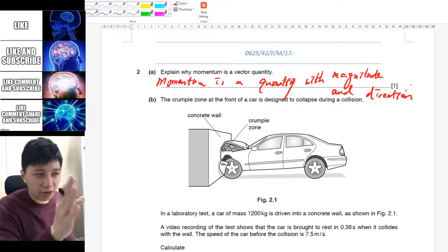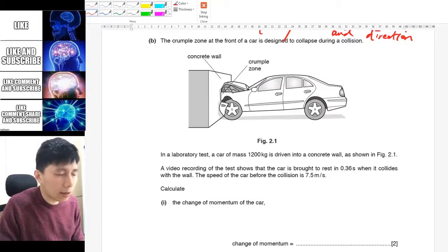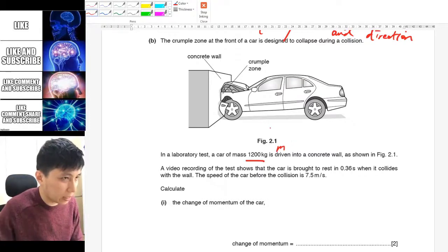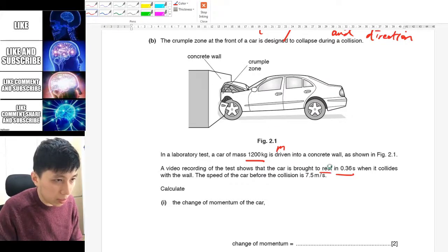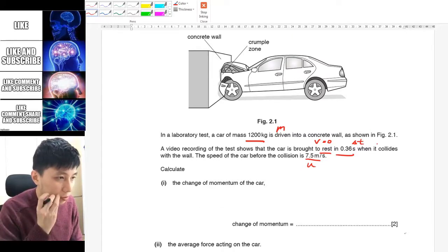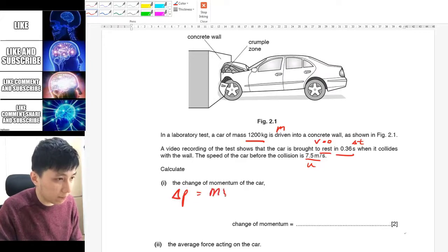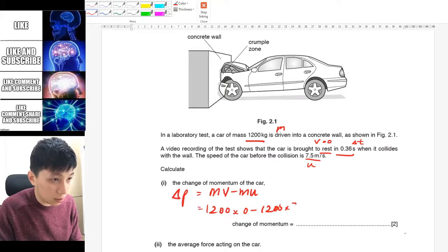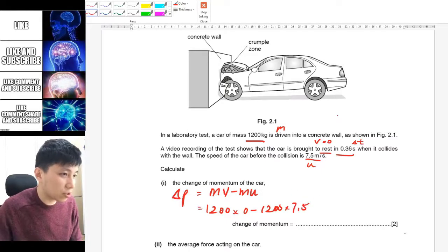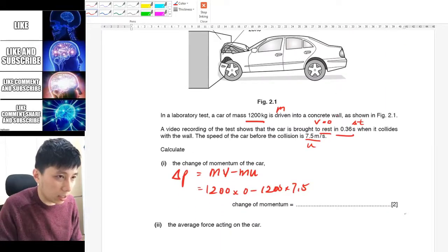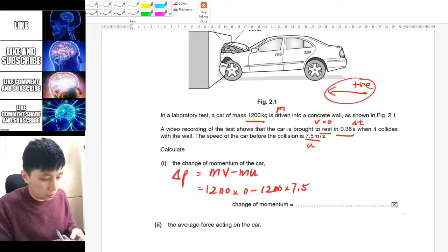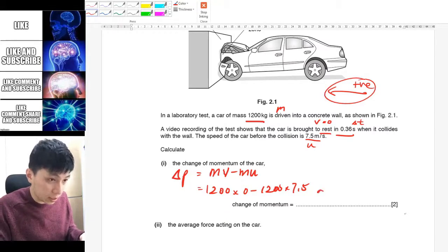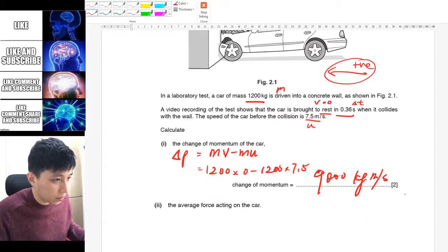Part B tells you about a car collision and so they have provided you the mass, so let's put down the symbol next to the values. Here it's brought to rest so that is V equals to zero. This is delta T and then this should be U before the collision. So it asks you to find the change in momentum. So delta P just recall the equation mV minus mU. Make sure you write this down. And then we have 1200 times 0 minus 1200 times 7.5. So depending on which direction you are taking, I think we can take it as to the left being positive. So just use your calculator and you find 9000 kg meter per second.